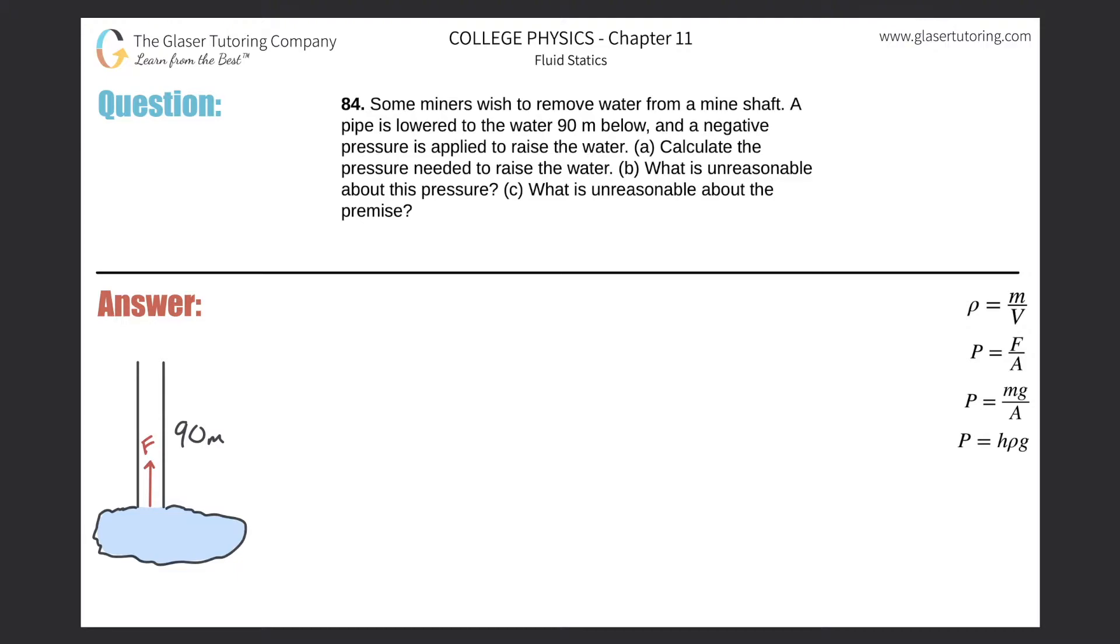Number 84: Some miners wish to remove water from a mine shaft. A pipe is lowered to the water 90 meters below and a negative pressure is applied to raise the water. Calculate the pressure needed to raise the water.